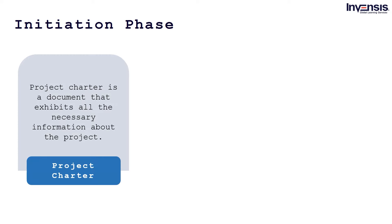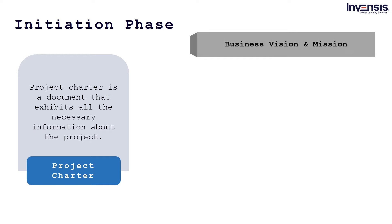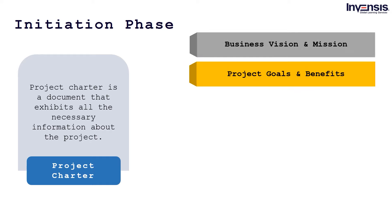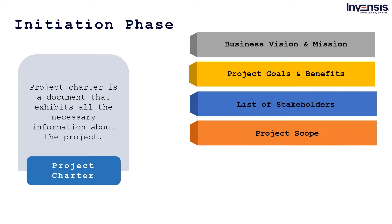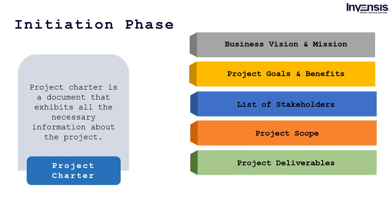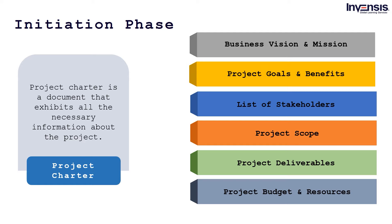The project charter is one of the most important tools in the project initiation process. It is a document that contains the following information about the project: business vision and mission, project goals and benefits, list of stakeholders, project scope, project deliverables, project risks, and project budget and resources.